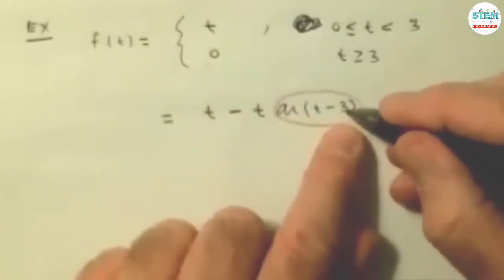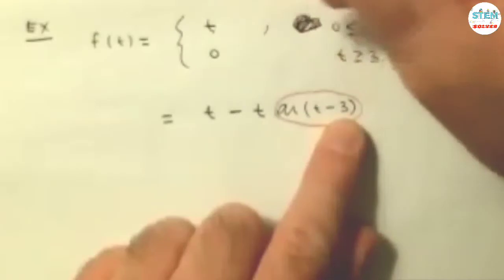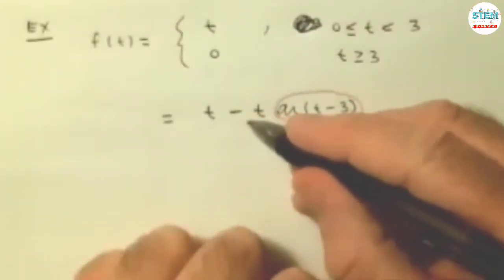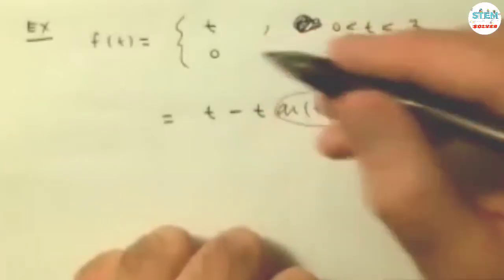When you hit this number, when you hit 3, a is 3. That's when it comes on. So this thing I have circling in orange now is 1. So I have t minus t times 1. t minus t is 0. That's what we get.